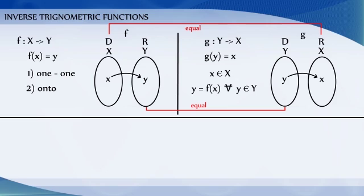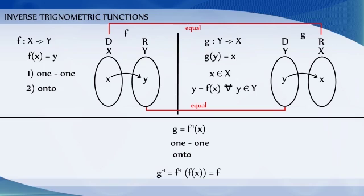The function g is called the inverse of f and it is denoted by f inverse. Further, g is also one-to-one and onto, and the inverse of g is f. Therefore, g inverse is equal to (f inverse) inverse, which is nothing but f.